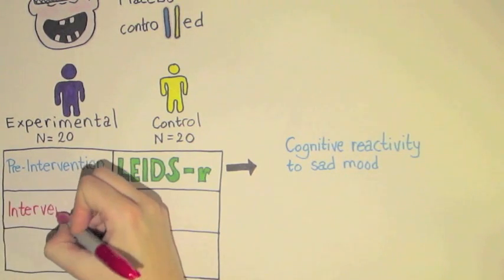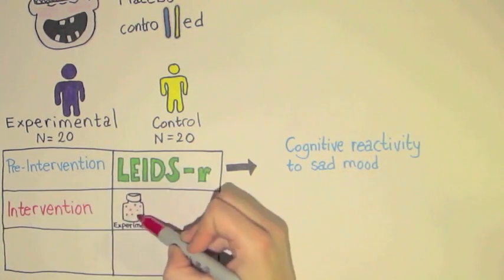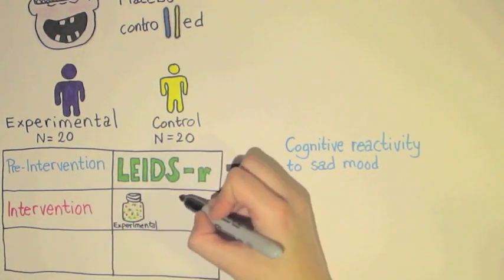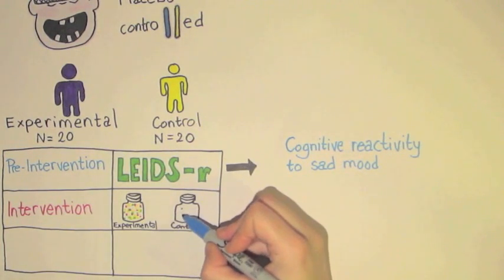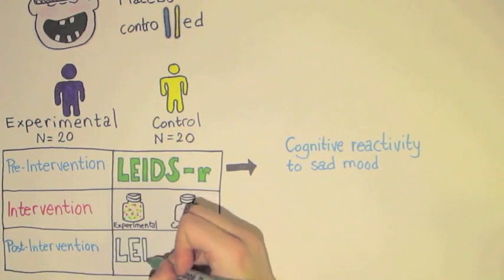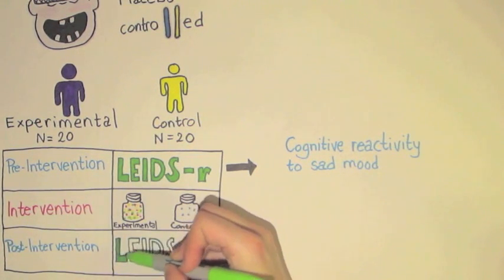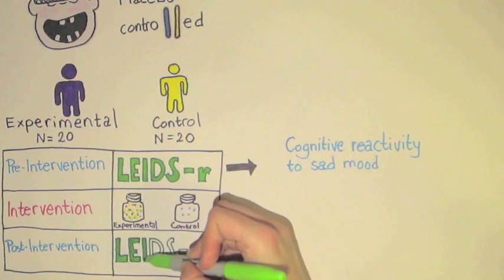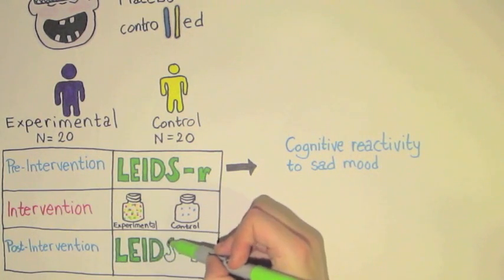In the intervention phase, the experimental group received the probiotic mixture, Ecologic Barrier, and the control group received the placebo. After four weeks of taking this supplement, all participants again completed the revised Leiden index of depression sensitivity questionnaire in the post-intervention phase.